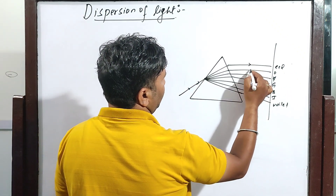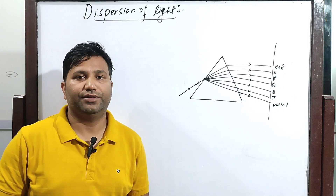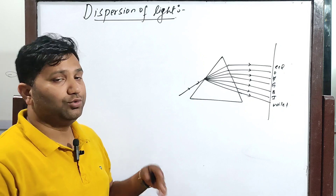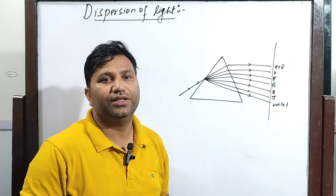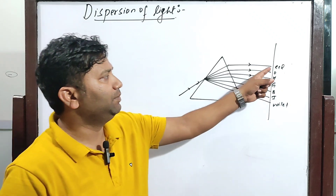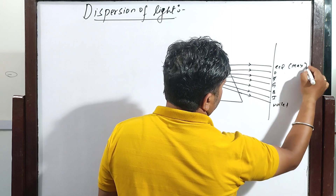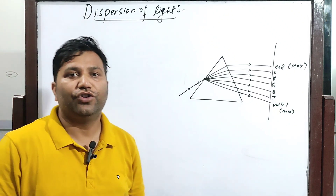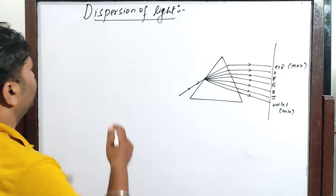Now we will be discussing about the cause of dispersion. What is the main reason for the light to disperse? All these colors have different wavelengths. In the visible light spectrum, the red color has the maximum wavelength and the violet color has the minimum wavelength. A scientist Cauchy developed a relation known as Cauchy's Dispersion Law.